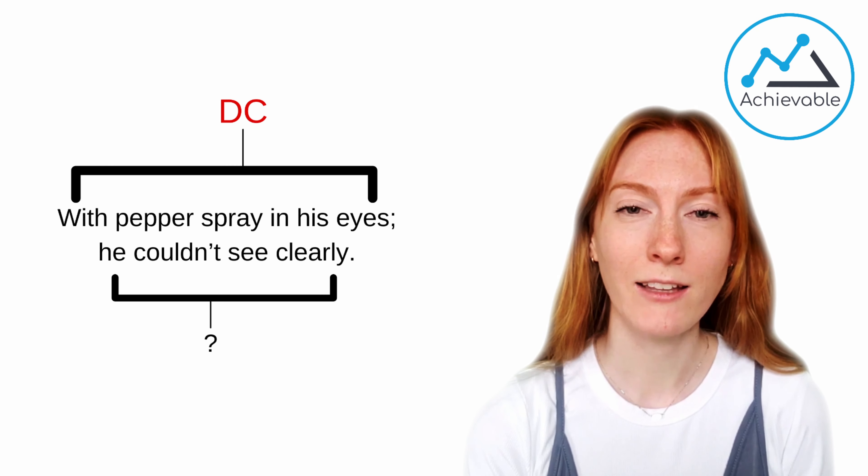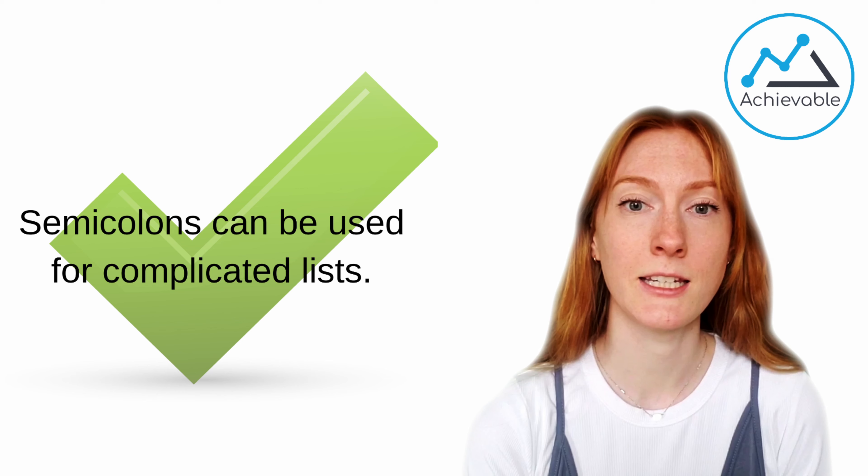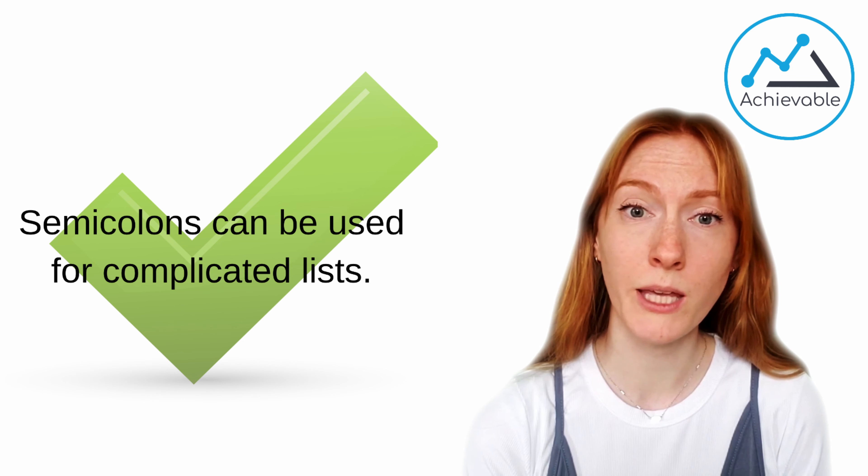Here's another rule and it's a rare one but it can pop up. Semicolons can be used to separate things in a list, and this is used when the items in the list are either super long or complicated, or the items in the list have commas in them themselves.